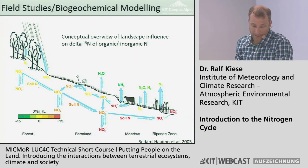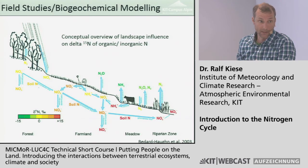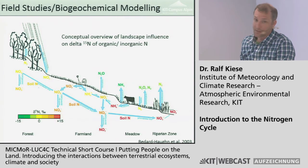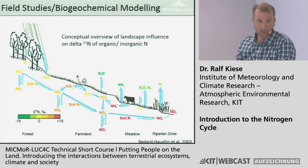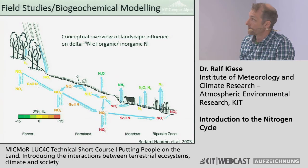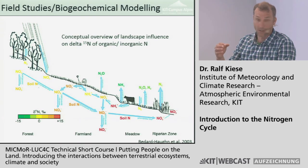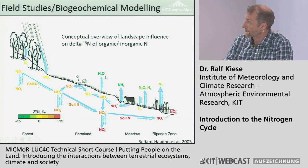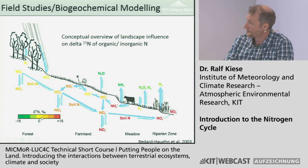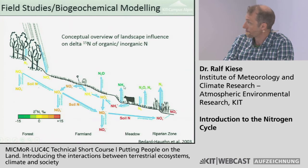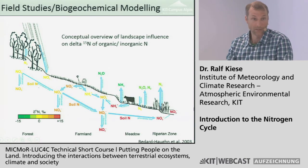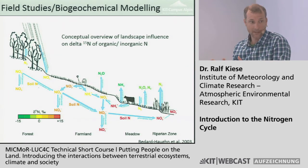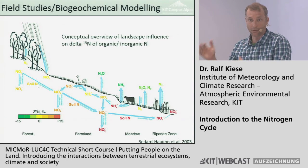Landscape-scale validation of these models is tough and requires many measurements. We can use stable isotopes: whenever there is turnover, the heavy stable isotope 15N stays in the soil while lighter fractions leave with gas export. The atmosphere has a signature of zero — with turnover we move toward heavier values in the soil. We can use these isotopes at landscape scale to validate models and to look at turnover rates.